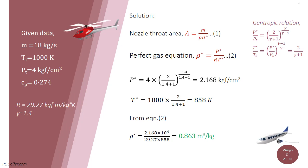Where gamma is the heat capacity ratio which is 1.4. Thus, P star is equal to 2.168 kg force per cm² and T star is equal to 858 kelvin.